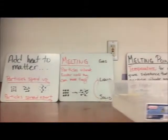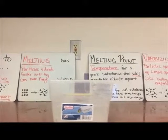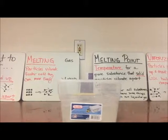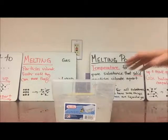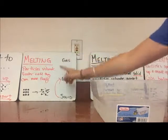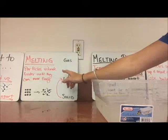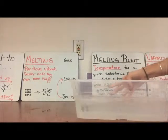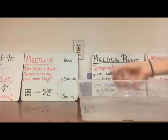The first thing that we are going to look at is melting. Melting happens when the particles in a substance vibrate faster and faster until they start moving and sliding freely past each other, and we get a solid to turn into a liquid.